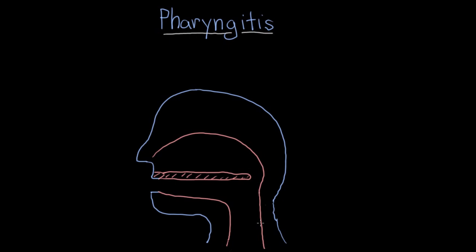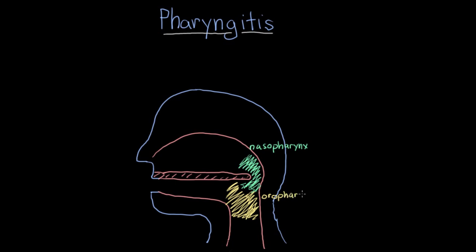Now the pharynx is divided up into three parts, which are actually very intuitive based on anatomical location. Right here is the nasal passage, so the top part of the pharynx is known as the nasopharynx — this is the connection between the nasal passage and the pharynx. Right here we have the oral cavity, so this is called the oropharynx. And finally, the bottom-most portion of the pharynx is known as the laryngopharynx. Laryngo refers to the larynx, also the voice box, so this is the area of the pharynx just above the voice box.